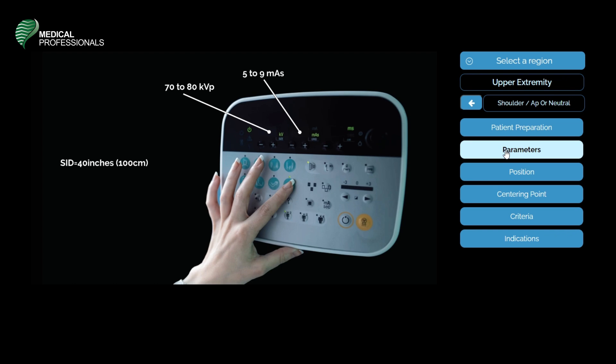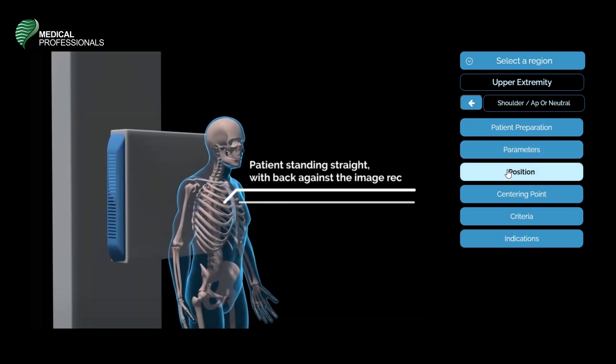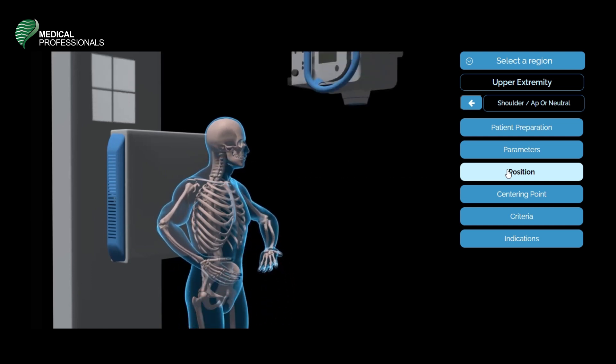The source image receptor distance is 40 inches or 100 centimeters. The patient position starts with the following. The patient is standing straight with their back against the image receptor.